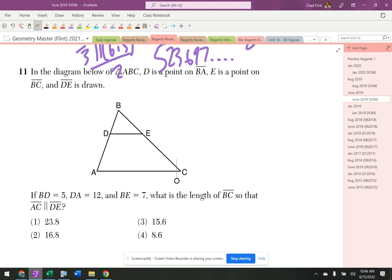So it says, I was looking for this. It says usually it says the lines are parallel. It says what length would make them parallel. It's just asking you when are these triangles similar?